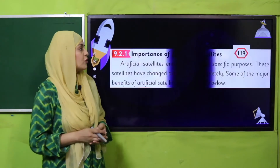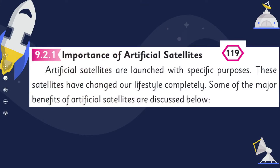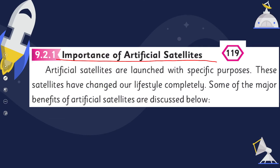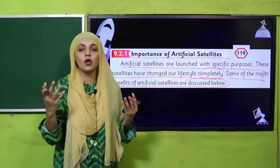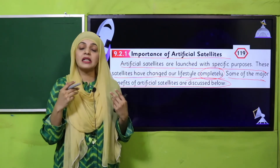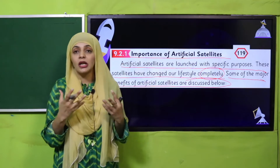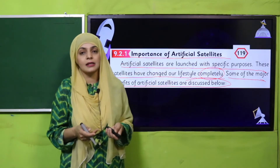Now is the time for reading. Please open page number 119 in your Science 5 books. Let's start: Importance of Artificial Satellites. Artificial satellites are launched with specific purposes. These satellites have changed our lifestyle completely. Some of the major benefits of artificial satellites are discussed below.